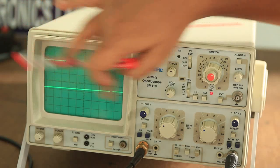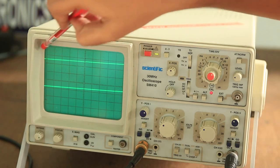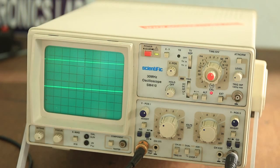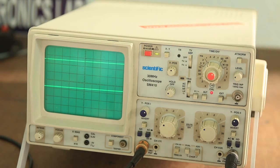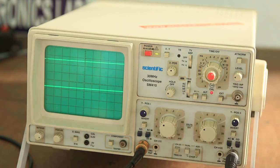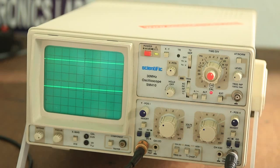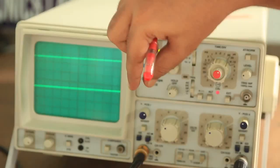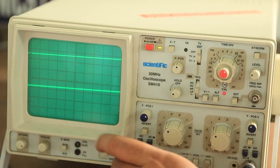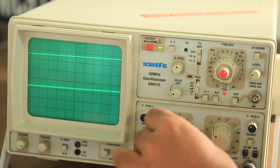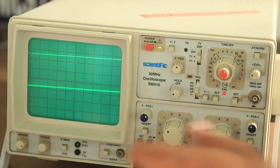This is the cathode ray screen. Now there are so many knobs. First of all, concentrate on these two big knobs. This part consists of one channel. This is we call it channel 1 and this is channel 2.